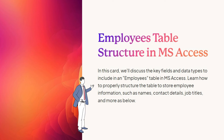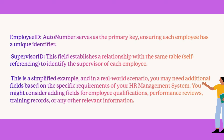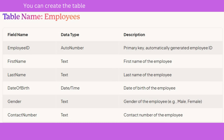Employee ID as an Auto Number serves as the primary key, ensuring each employee has a unique identifier. A self-referencing field establishes a relationship within the same table to identify the supervisor of each employee. In a real-world scenario, you may need additional fields such as employee qualifications, performance reviews, training records, or any other relevant information.